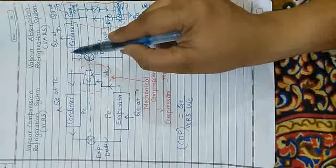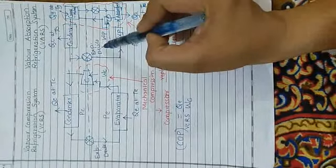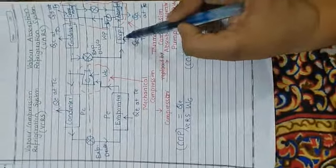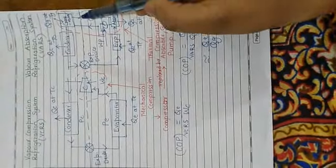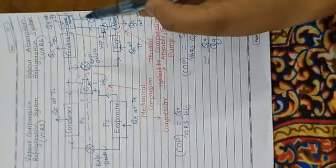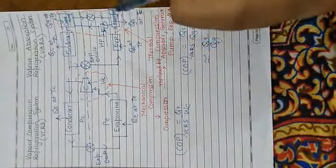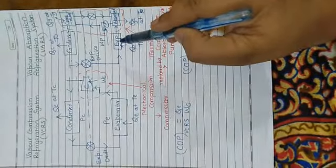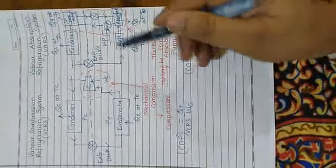Then the liquid refrigerant is throttled by an expansion device to the evaporator pressure. At the condenser side, the solution which is weak in refrigerant is throttled back to the absorber, where it again becomes rich by absorbing the refrigerant vapors coming out of the evaporator.